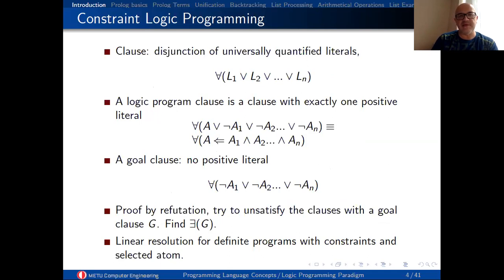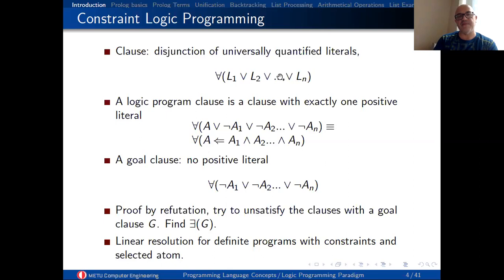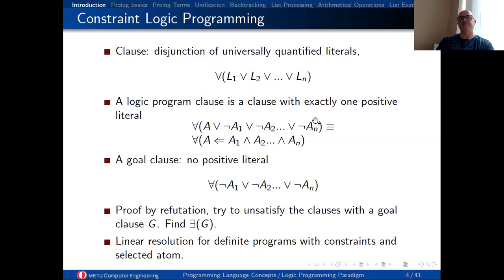Some basics — you don't have to know much of these details but just to give you a brief idea of what is going on logically. A clause logically is just the disjunction of universally quantified literals. So if you have variables in these logical literals, those variables are universally quantified — for all X, Y, Z and so on — and they are a disjunction of them: L1 or L2 or and so on. In a logic program clause we have a special type where we have one positive and all the remaining clause literals are negative.